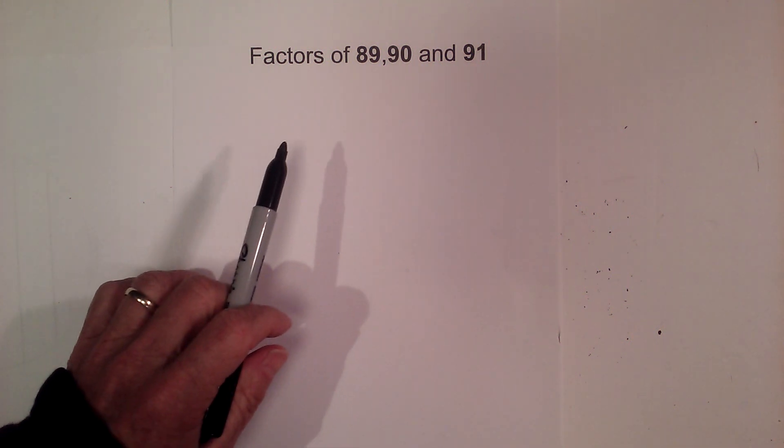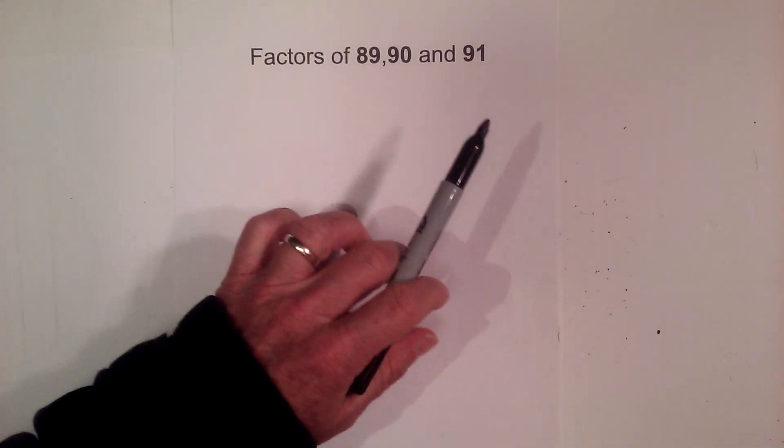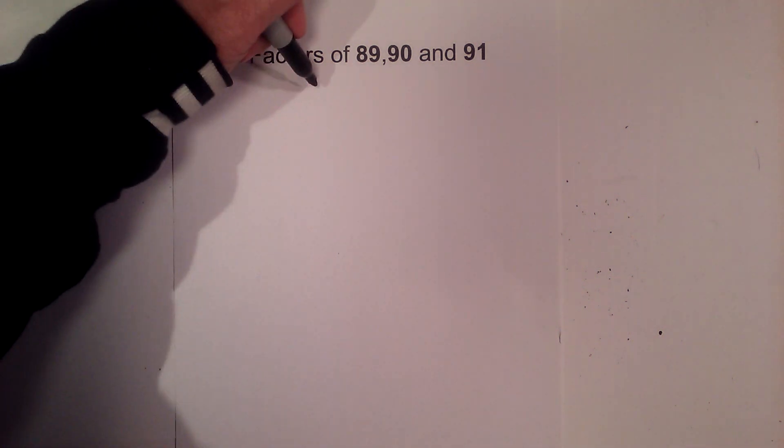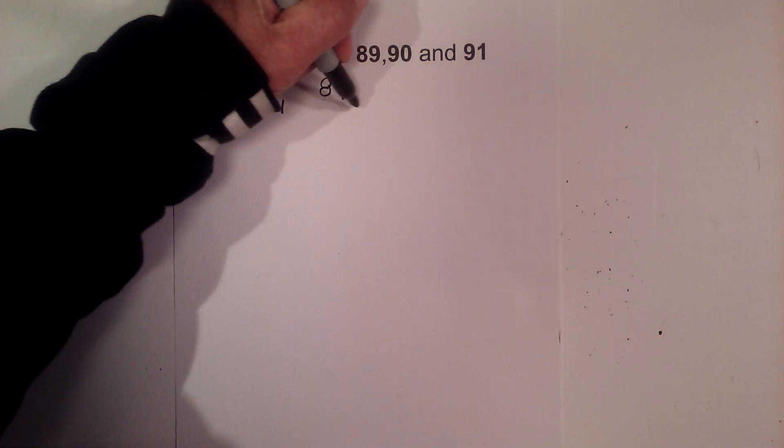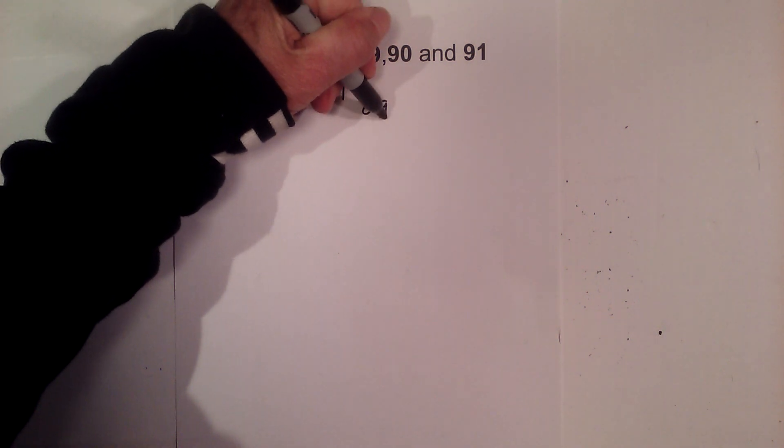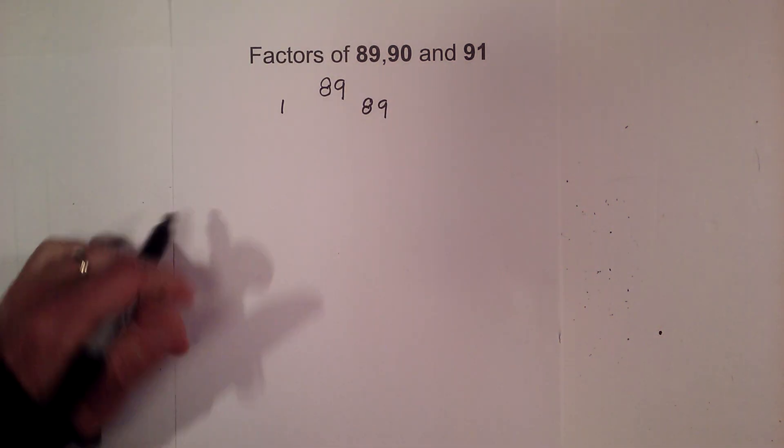In this video, I'd like to go through the factors of 89, 90, and 91. Let's get started with 89 first. 89 is a prime number, so only 1 and 89 go into that number.